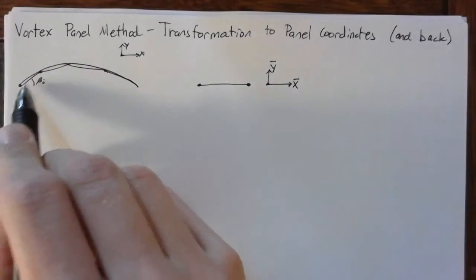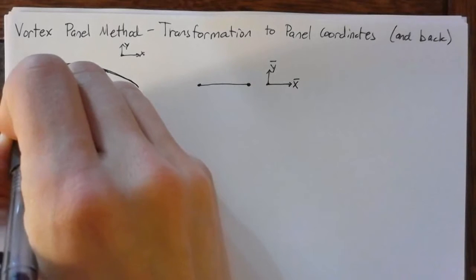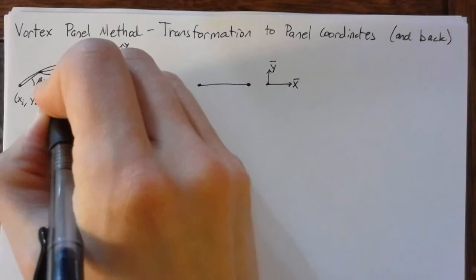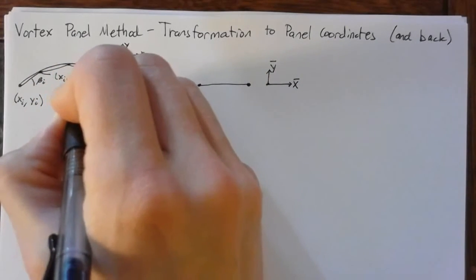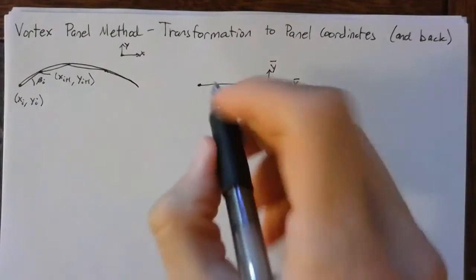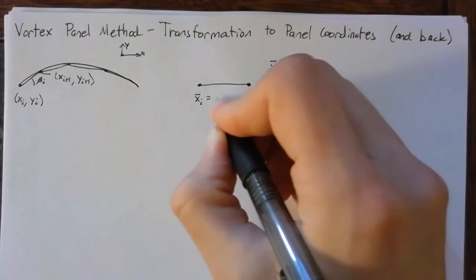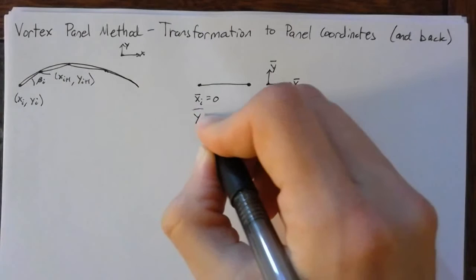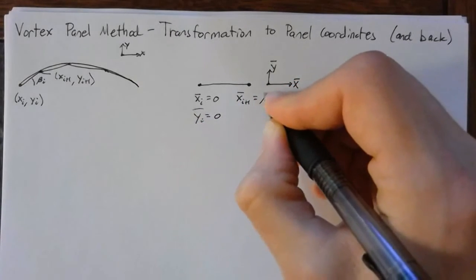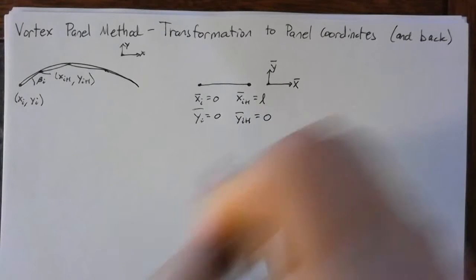Let's look at the actual points of our first panel here. The first point is just going to be some x sub i, y sub i, and our second point is x i plus 1 and y i plus 1. Whenever we want to transform these into the bar axis, we note that we want x-bar i to be equal to 0, y-bar i to be equal to 0, x-bar i plus 1 to be equal to L — which is the length of our panel — and y-bar i plus 1 should be equal to 0.